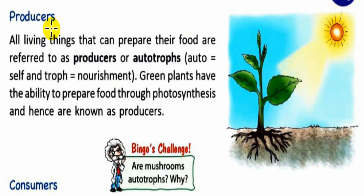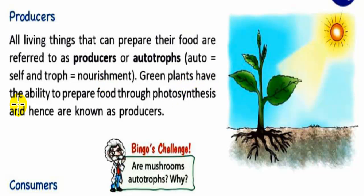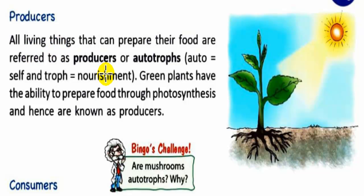Let's see the first one: producers. All living things that can prepare their own food are referred to as producers, or autotrophs. Auto means self and troph means nourishment. Green plants have the ability to prepare food through photosynthesis and hence are known as producers.